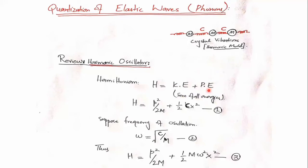Assume that there is no gravitational potential energy, but there is only elastic potential energy associated with the harmonic oscillator as well as kinetic energy. C is the spring constant. So the Hamiltonian is p²/2m plus half cx², which is the Hamiltonian for the harmonic oscillator.